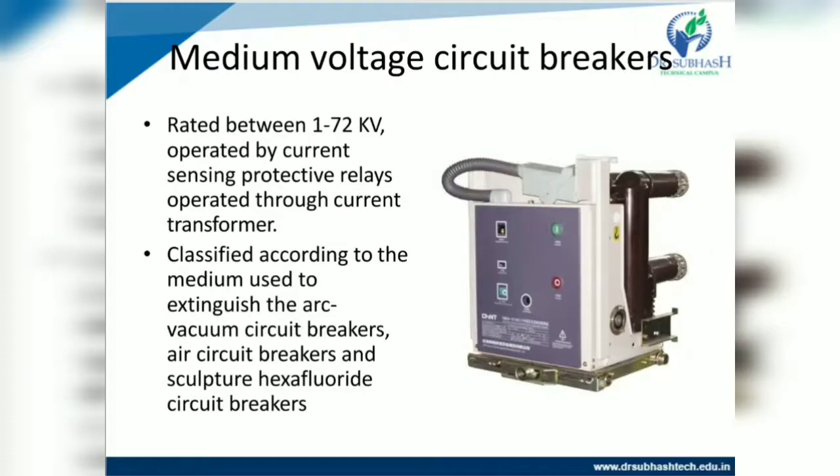The medium voltage circuit breaker is rated between 1 to 72 kV. It is operated by current-sensing protective relays through current transformers, so it requires a relay and CT. It is classified according to the medium used to extinguish the arc. Vacuum circuit breakers, air circuit breakers, and sulfur hexafluoride (SF6) circuit breakers use this type of mechanism.